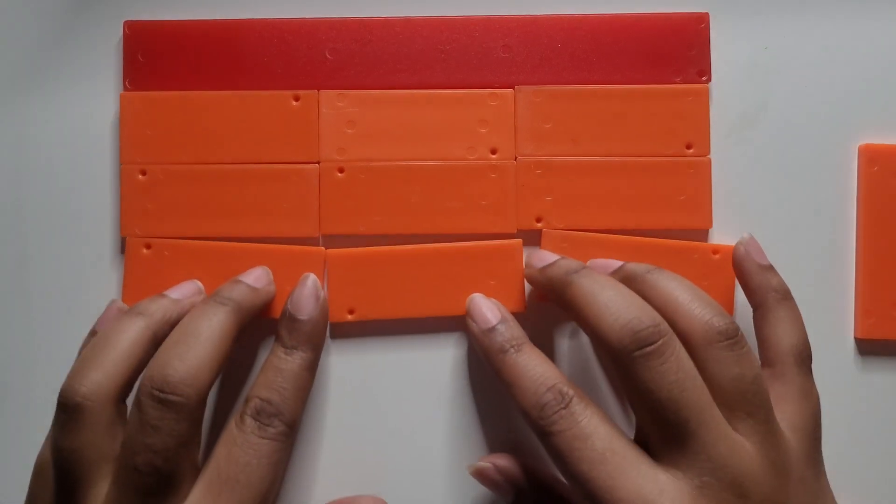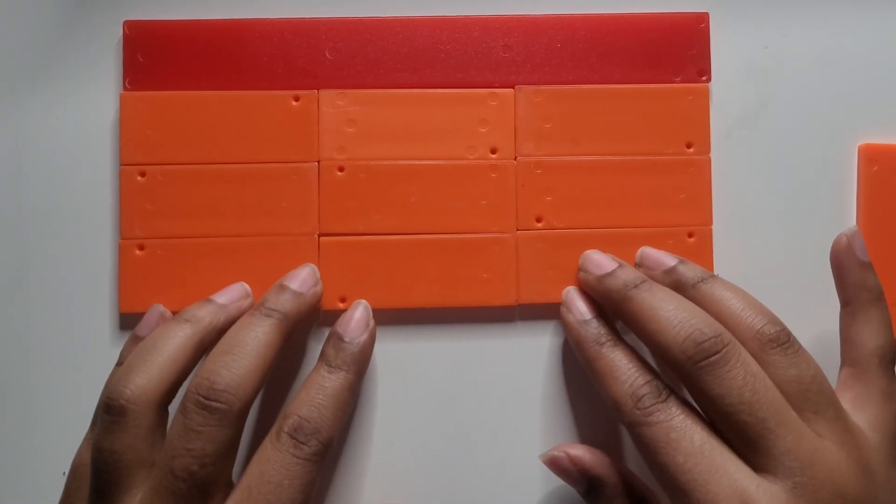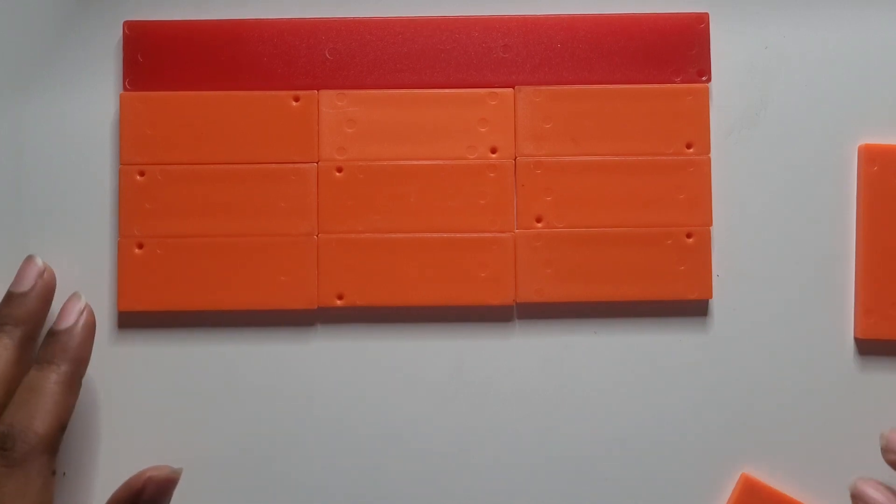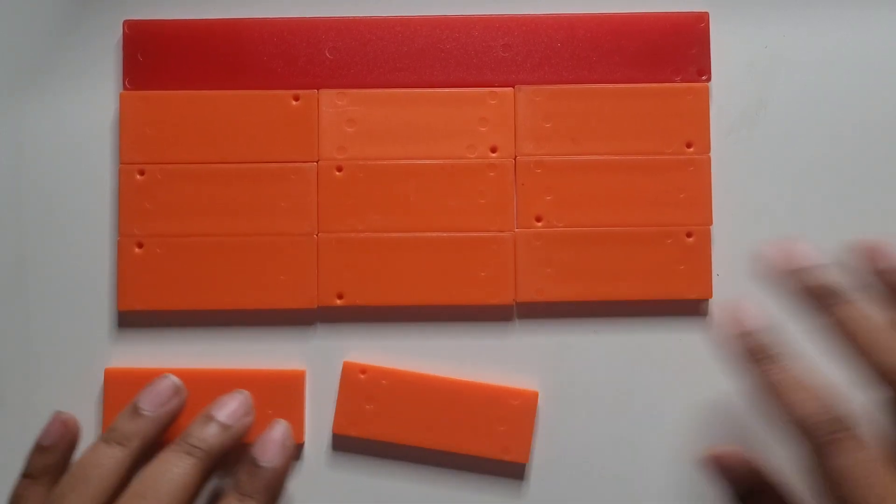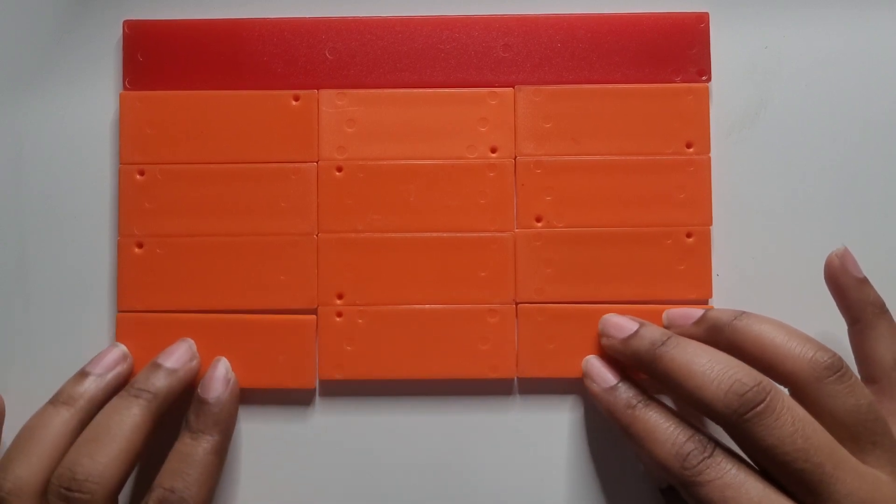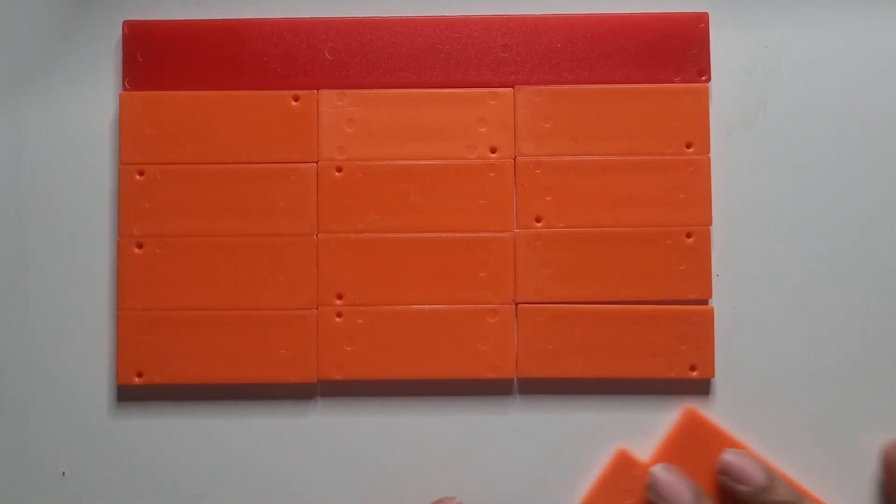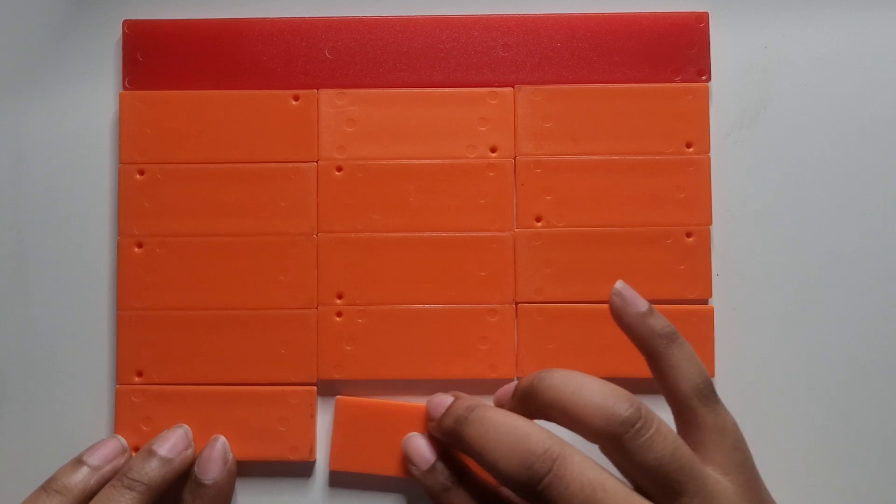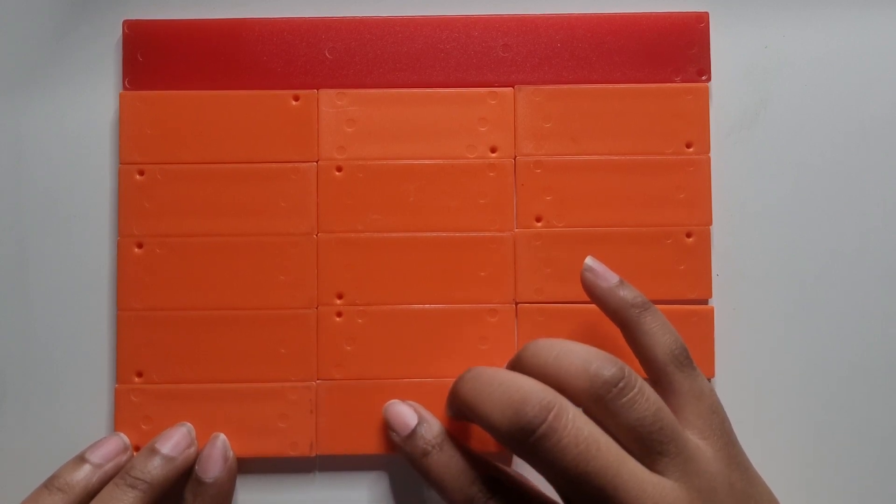Let's continue to do that until we use all of the 14 thirds. Now that all of the thirds are grouped into wholes, let's count how many wholes we made.